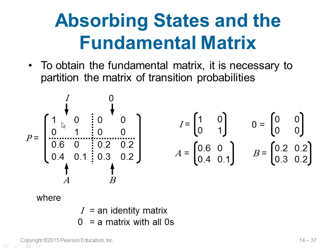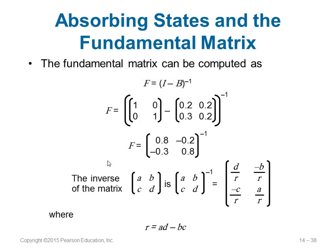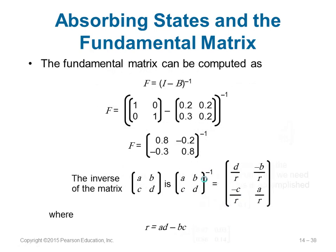The P matrix (matrix of transition probabilities) is divided into four parts: I (the identity matrix), a zero matrix, matrix A, and matrix B. To find F, the fundamental matrix, calculate F equals (I minus B) inverse. I is the identity matrix, and B comes from the lower right portion of your P matrix. To find the inverse of a 2x2 matrix with elements A, B, C, D: swap A and D, negate B and C, and divide by R where R equals AD minus BC.